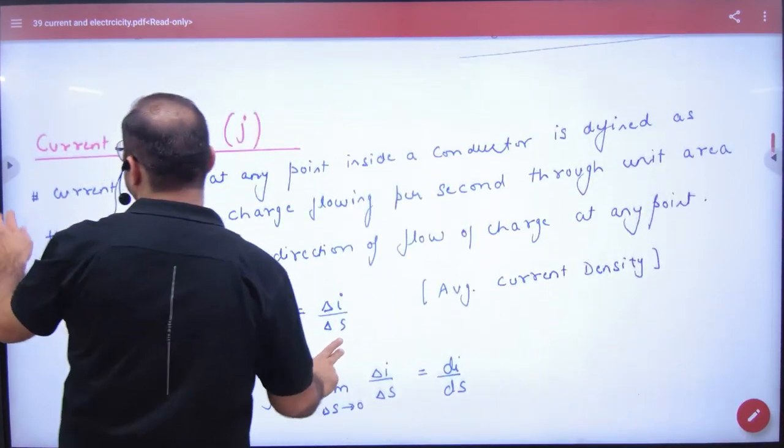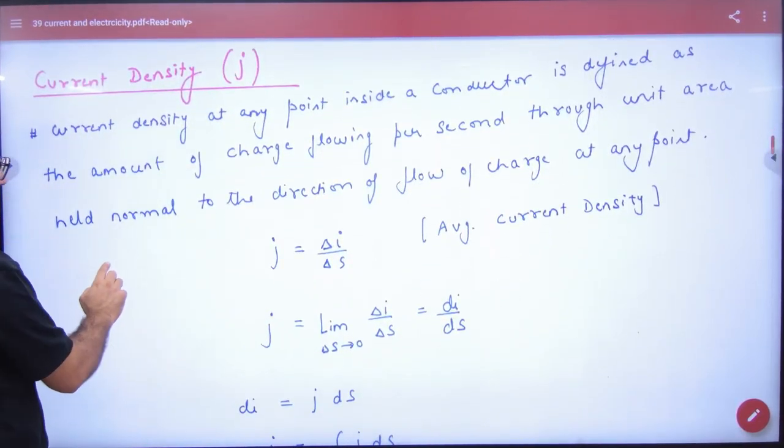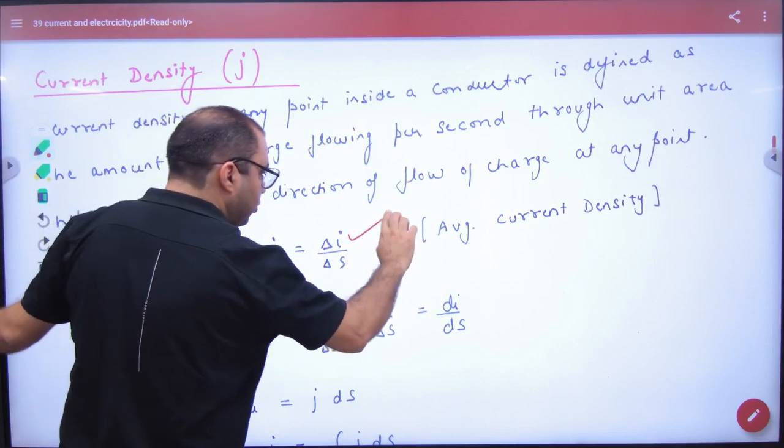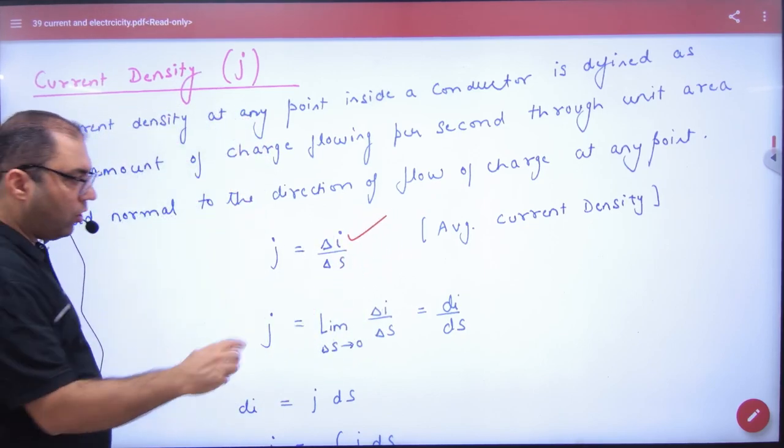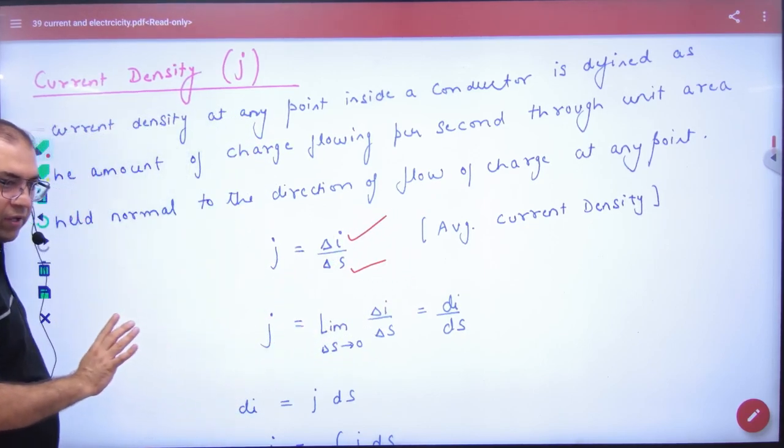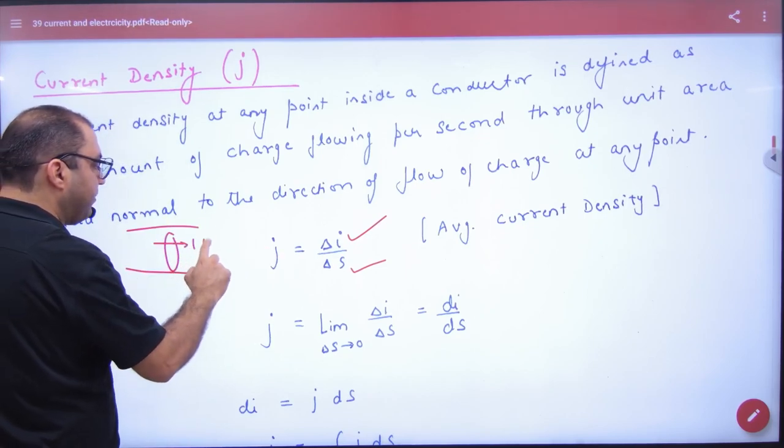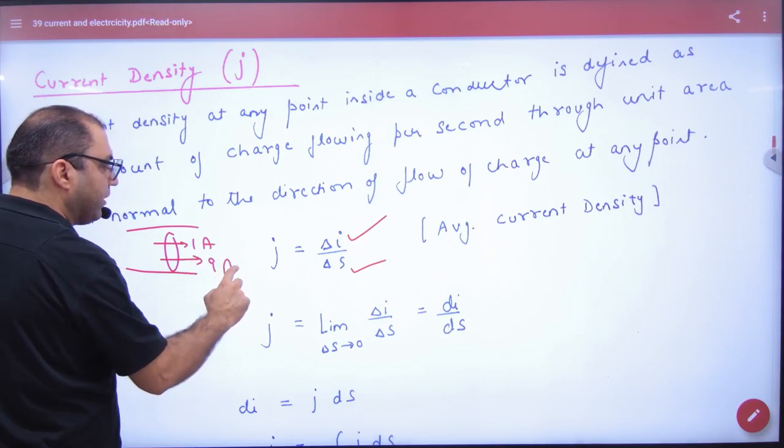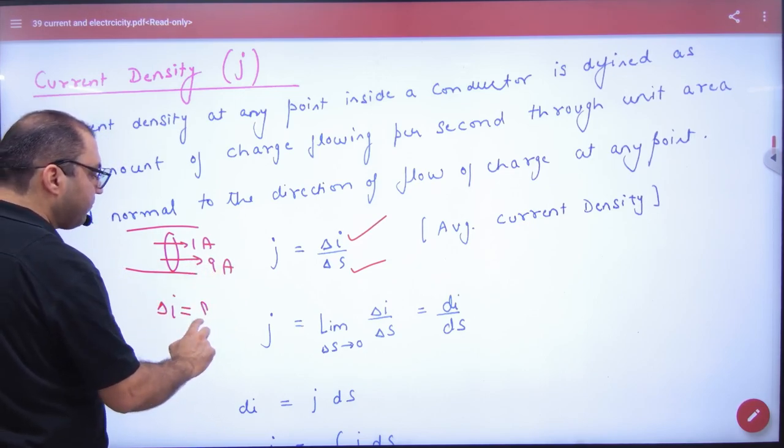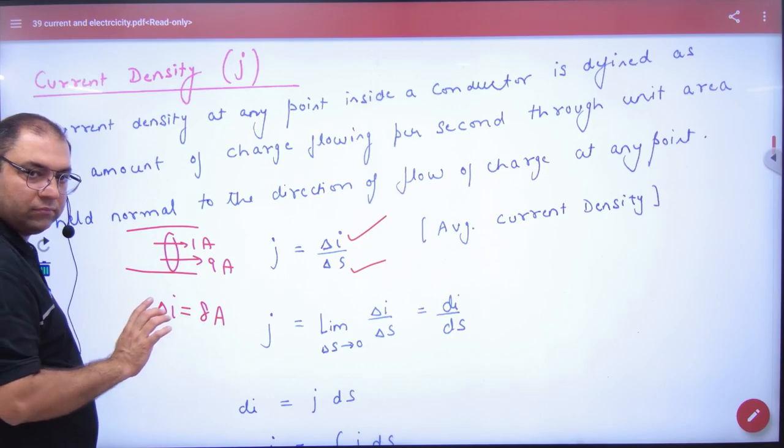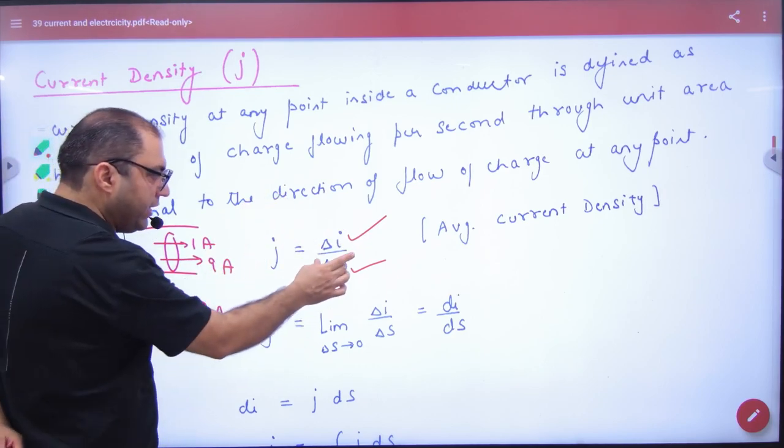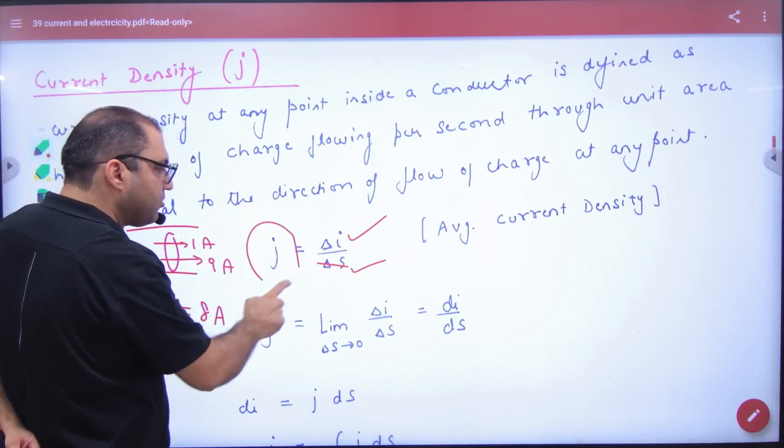To basic definition current density ki kya hai? Kitna charge flow kar gaya aur kitne cross section area mein. To agar maan lo current pehle S cross section mein se pass kar raha tha one ampere, aur thodi der mein kya ho gaya? 9 ampere. To delta I kya ho gaya? 8 ampere. To 8 ampere, aur area maan lo aapko question mein given hai, to aapke paas J ki value aa jayegi.